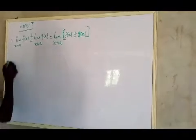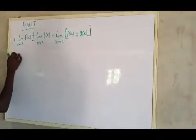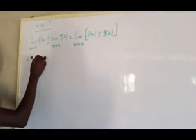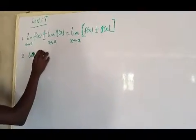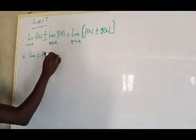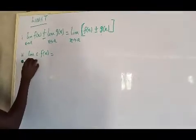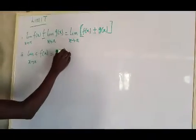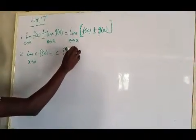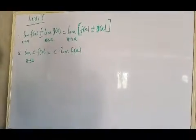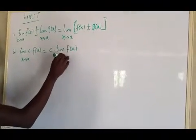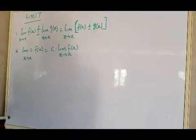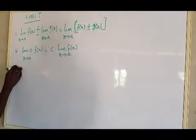The second theorem is that the limit of a constant times f(x) as x tends to a is the same as saying the constant multiplied by the limit of f(x) as x tends to a.